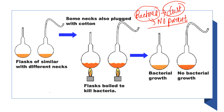To disapprove this theory of spontaneous generation, Louis Pasteur performed an experiment. Pasteur made a gooseneck-shaped vessel, and you can see the gooseneck shape in the diagram.